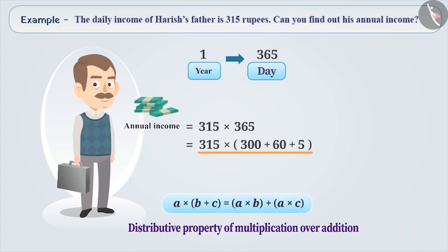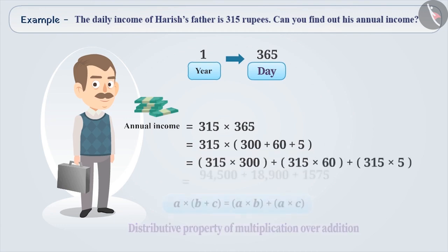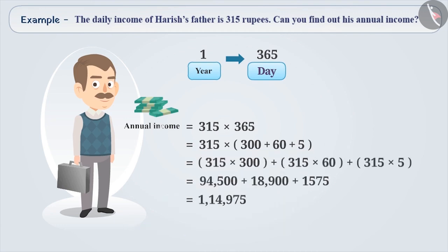By distributivity of multiplication over addition, we can write it as follows. Solving this, we get the annual income as Rs. 1,14,975.